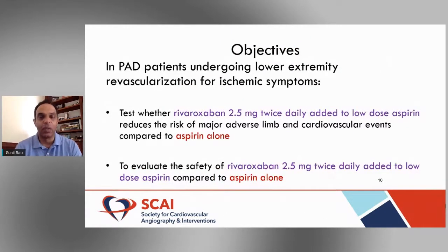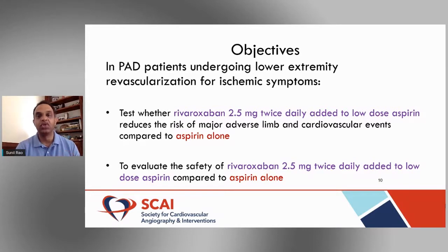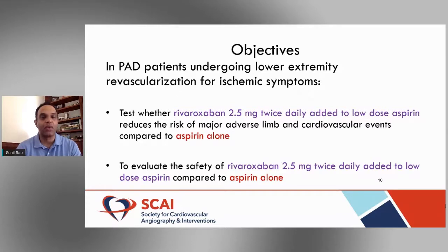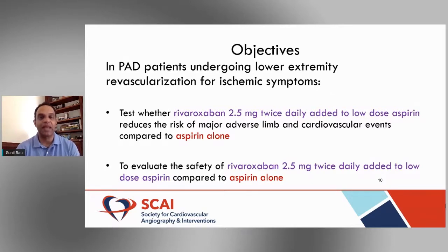The VOYAGER PAD trial built on the COMPASS trial, which showed that low-dose rivaroxaban reduced adverse cardiovascular events in a high-risk secondary prevention population, with a concentrated effect in PAD patients. VOYAGER PAD tested whether rivaroxaban at 2.5 mg twice daily, added to low-dose aspirin, reduced the risk of MACE and MALE compared with aspirin alone. Secondary objectives assessed the safety of this strategy.